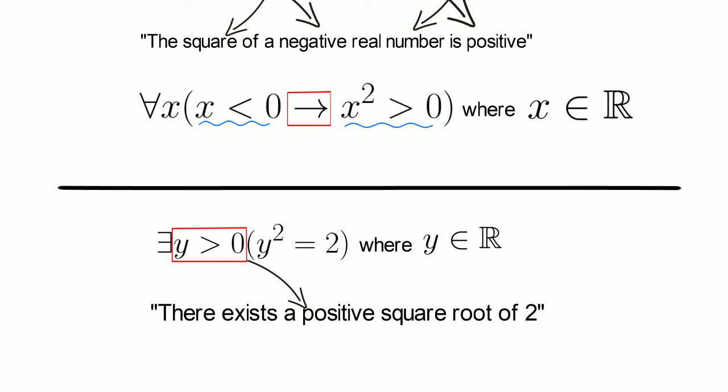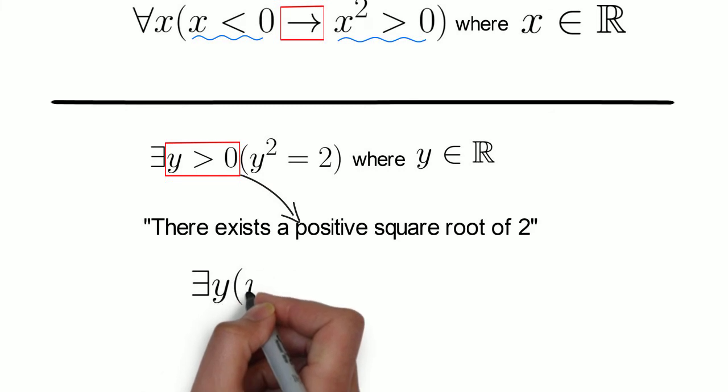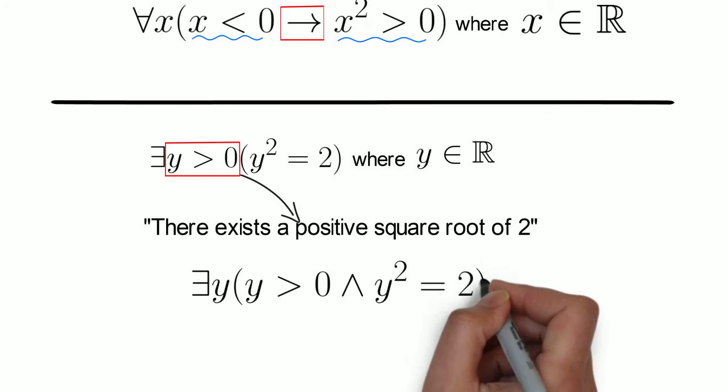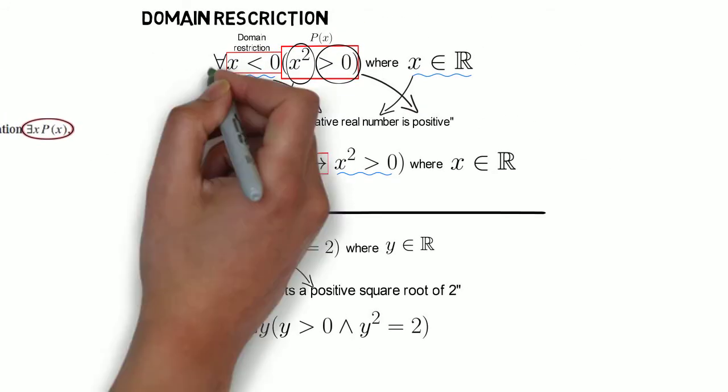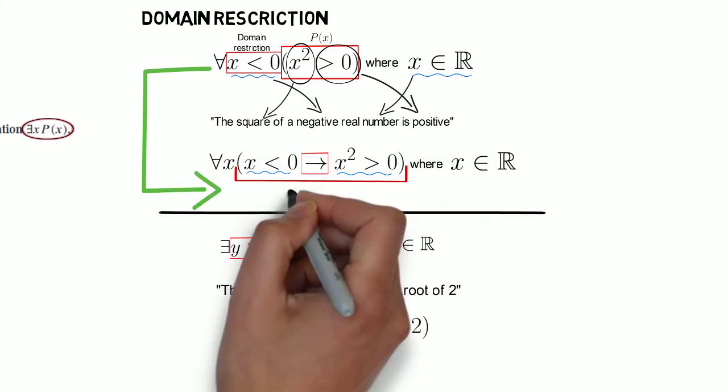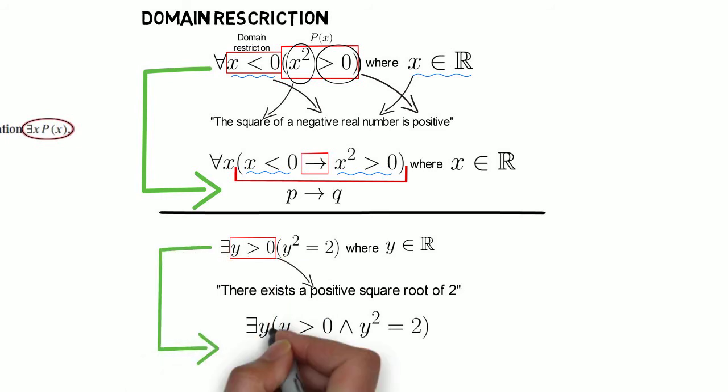This statement is also equivalent to: ∃y (y > 0 ∧ y² = 2). Notice that, with the universal quantifier, the equivalent is an implication statement, while with the existential quantifier, the equivalent is a conjunction statement.